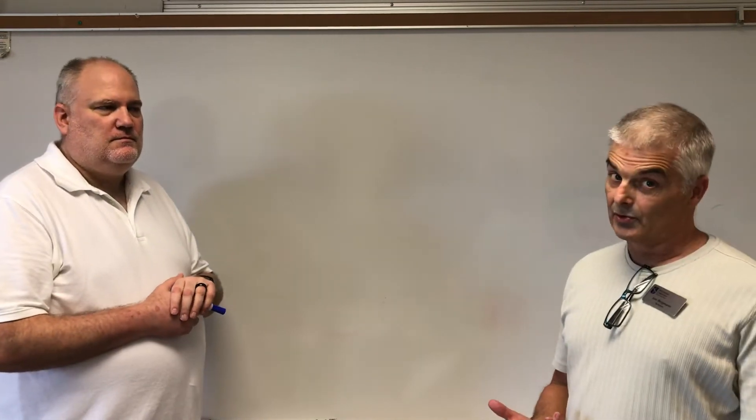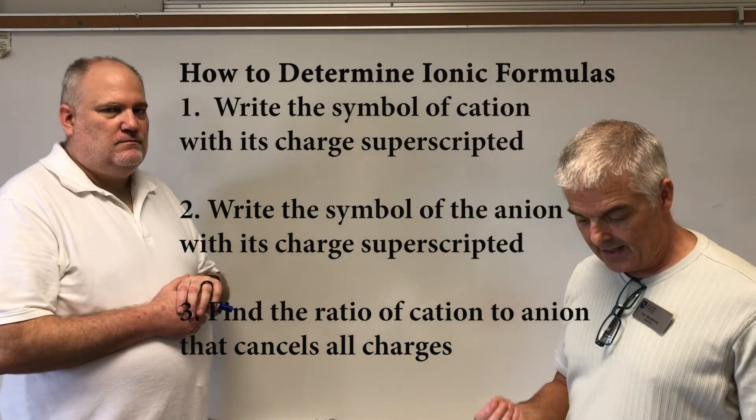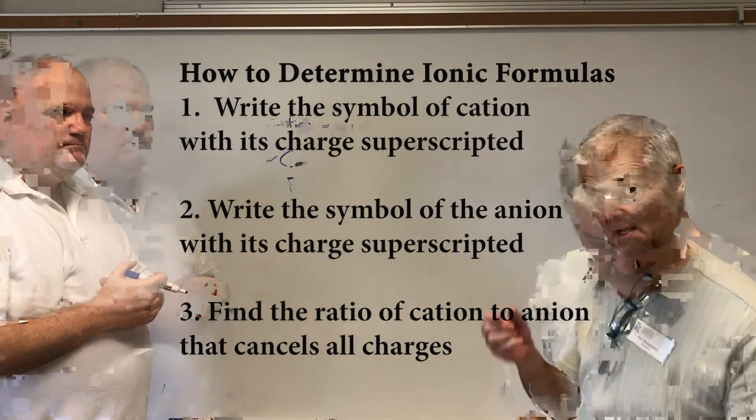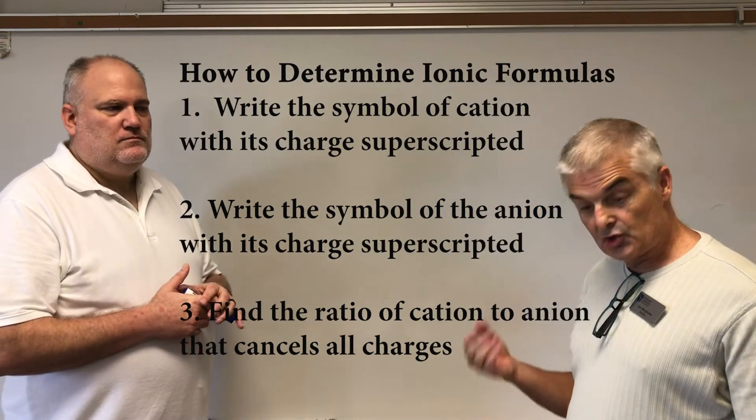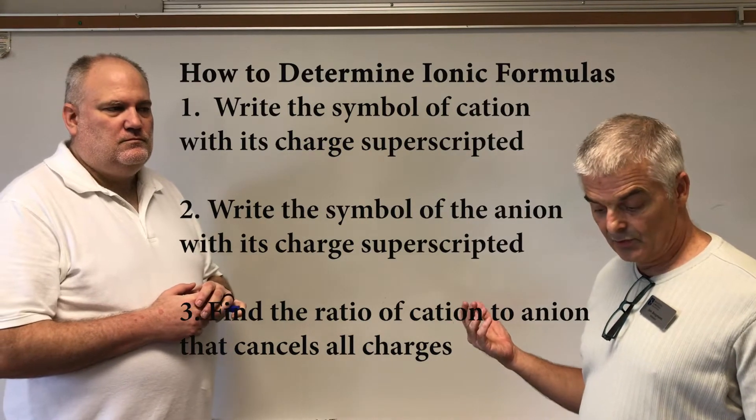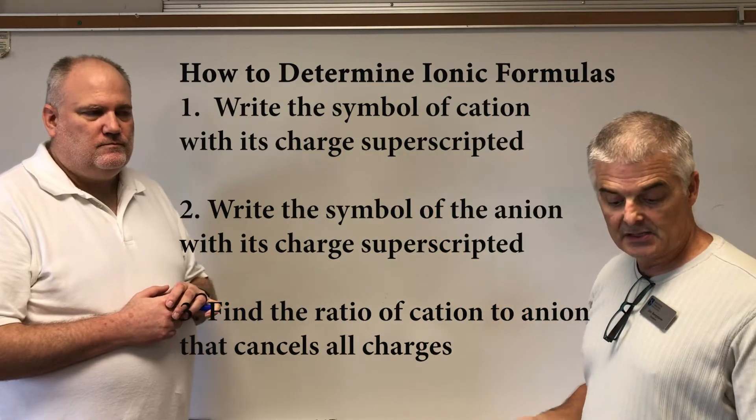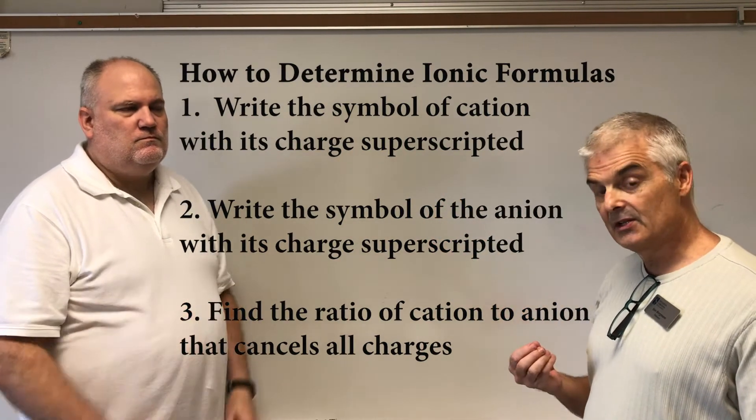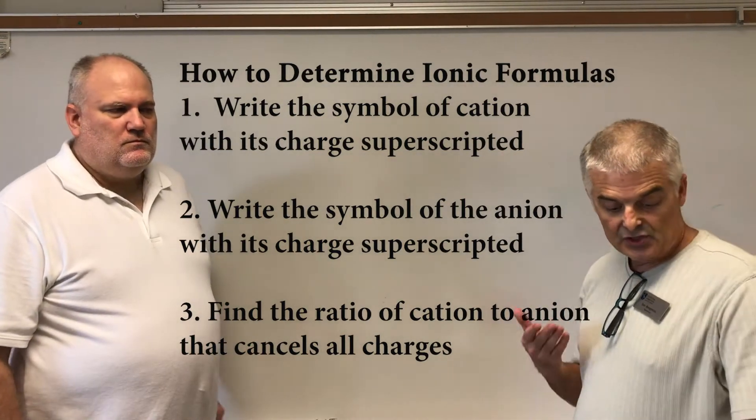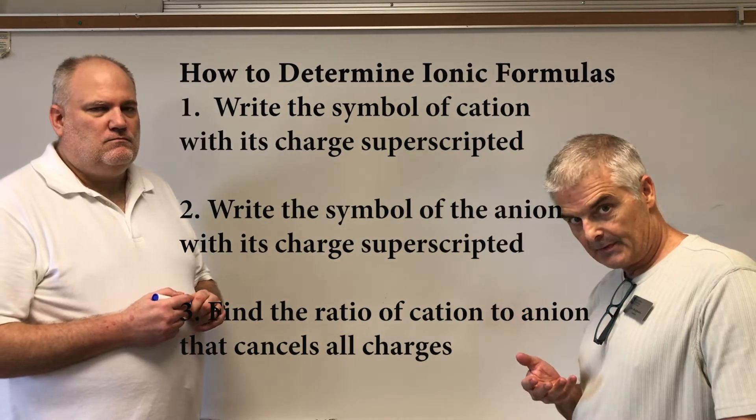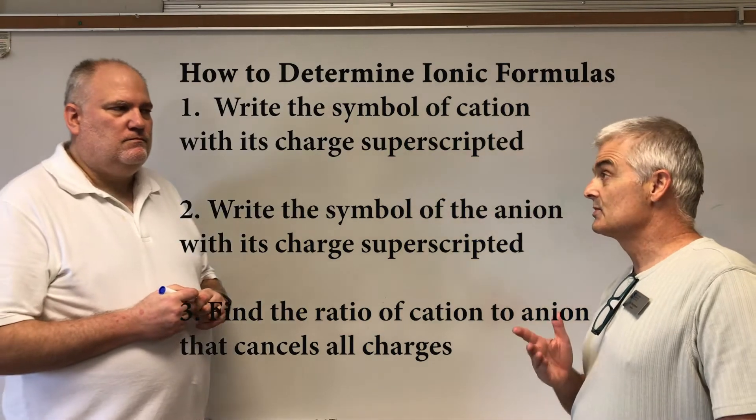It turns out that there's three rules for writing these formulas. Number one, write the symbol of the cation with its charge in superscript. Number two, write the symbol for the anion with its charge as a superscript. And lastly, you want to find the ratio of the cation to the anion with such charges that they add up to zero. Hopefully you've paused the video and written those down. Now we want to do some examples.